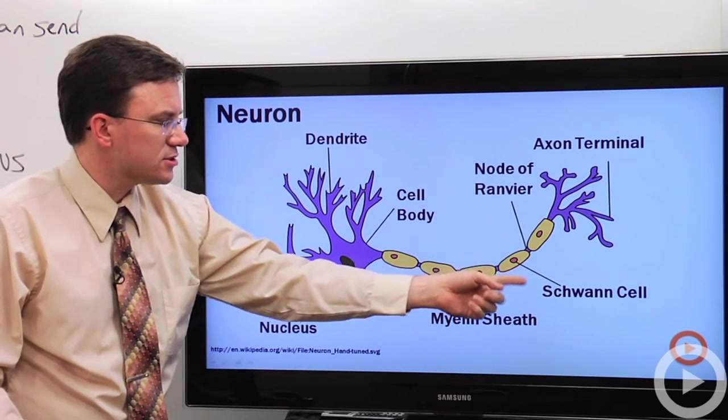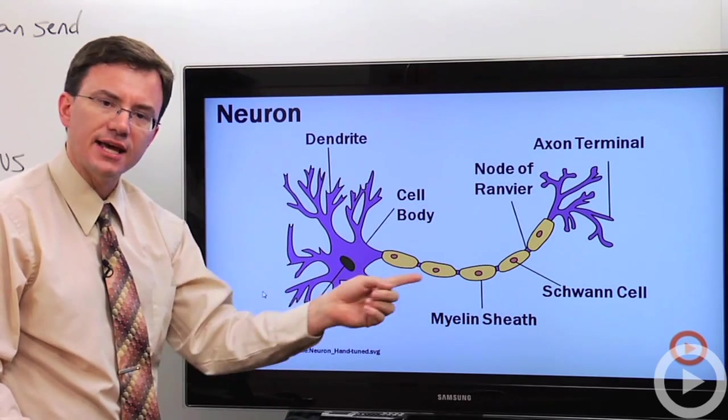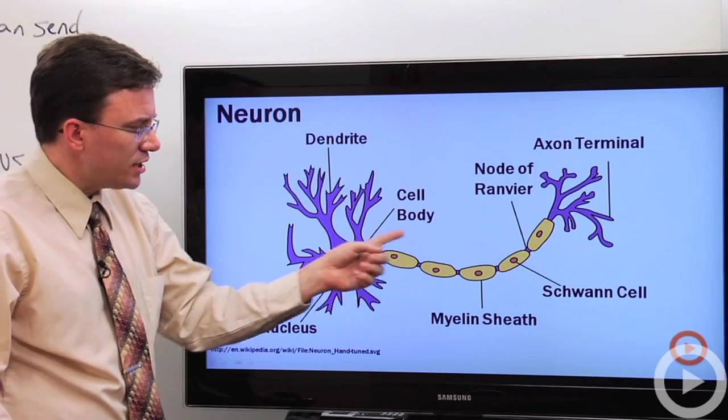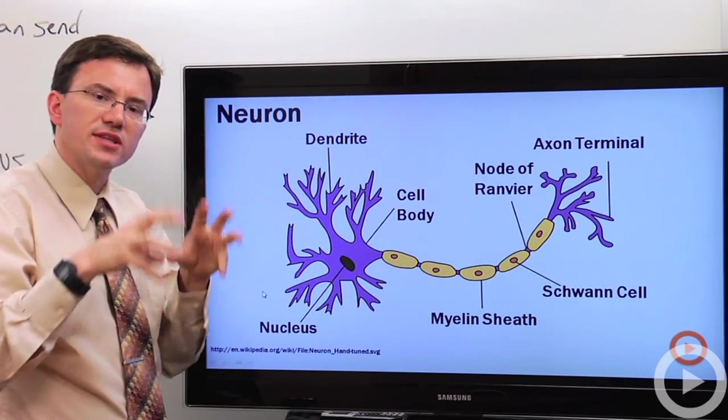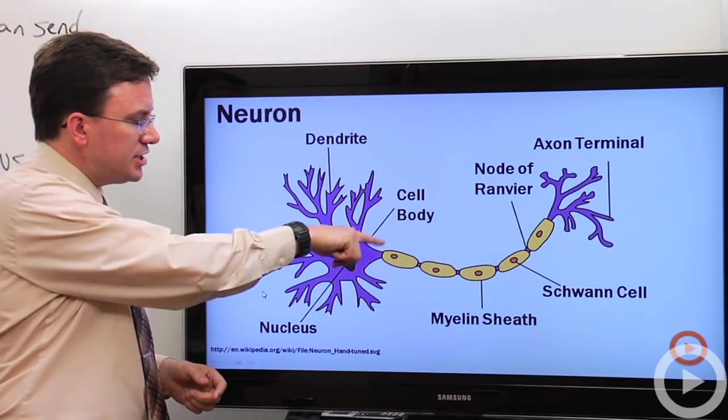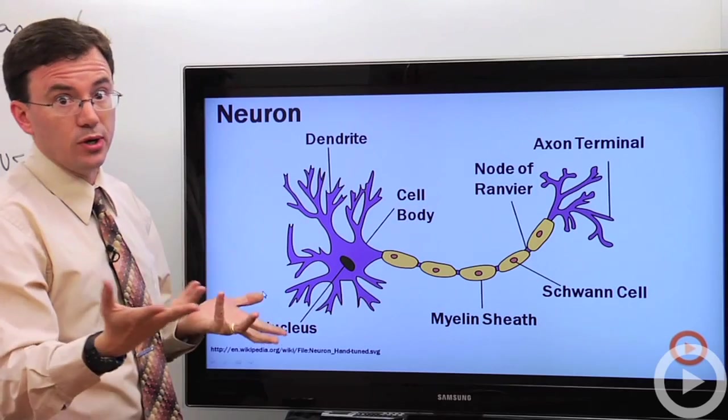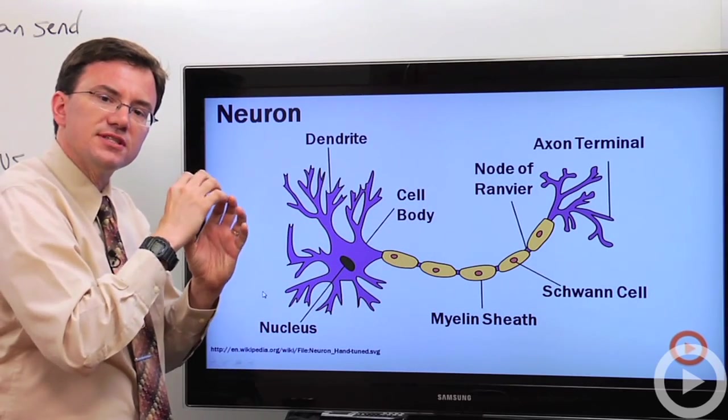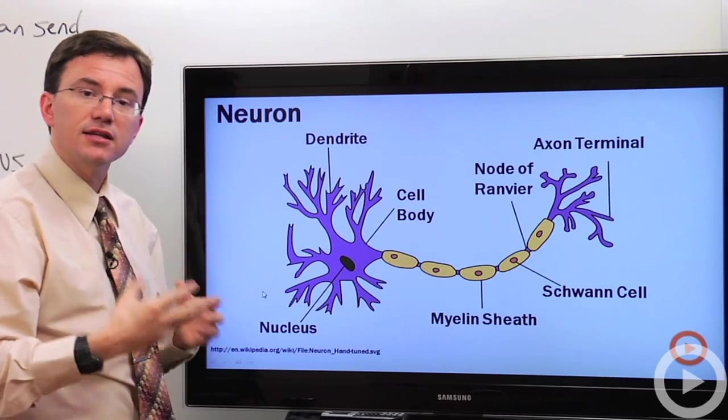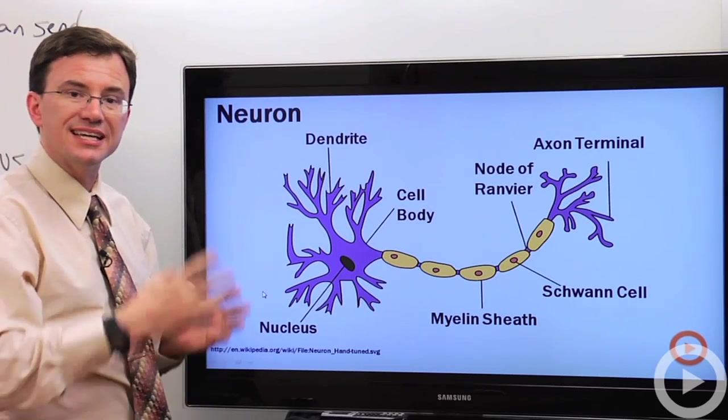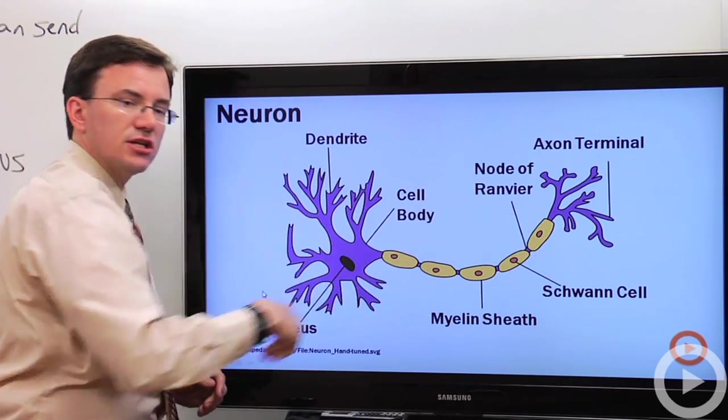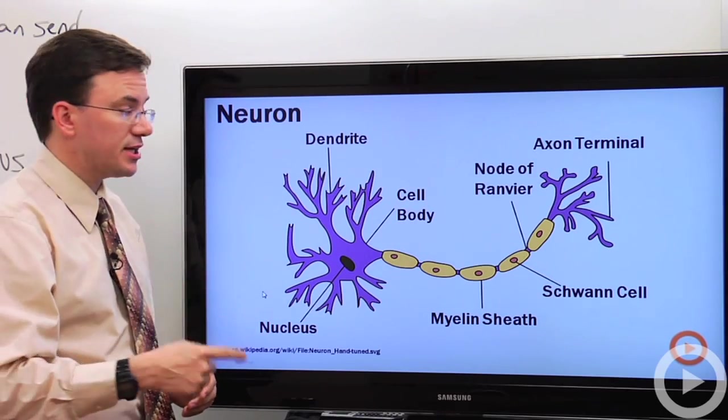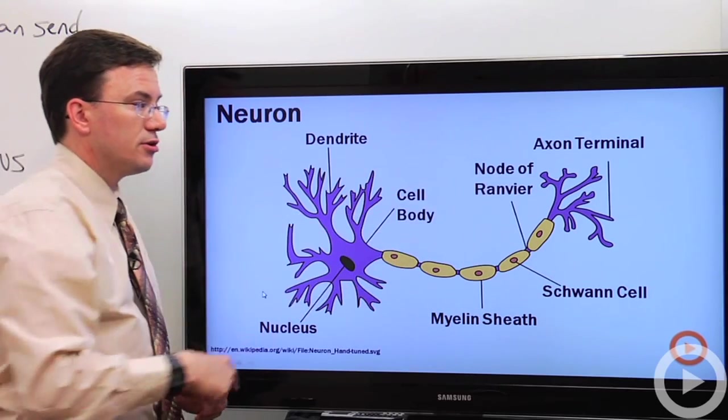Now, you see there's these things called Schwann cells wrapped around this axon. The Schwann cells are filled with this kind of fat called myelin. And each Schwann cell, named after Dr. Schwann, I assume, wraps itself around that, and it forms this sheath of myelin. Myelin is a kind of fat, and what this does is it greatly speeds up the transmission of electrical signals called action potentials as they go along the neuron.